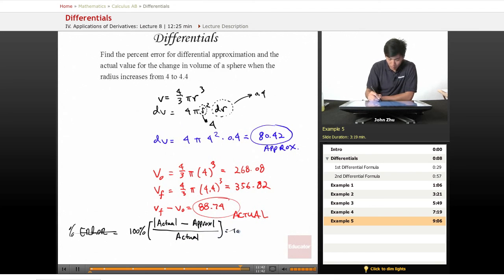So we get 100% times 88.74 minus 80.42 over 88.74. And if we carry this out, we get a value of 9.4%.